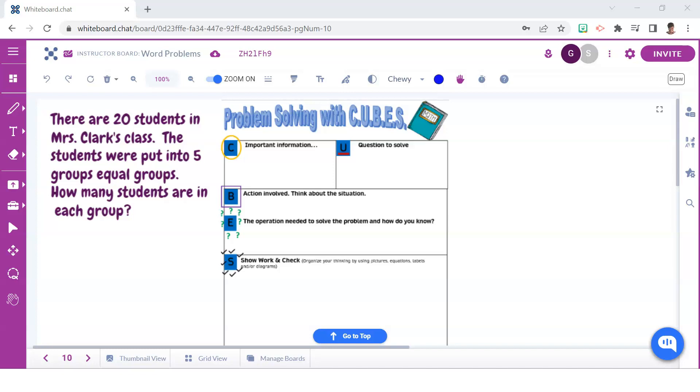Let's try this next example. It reads: There are 20 students in Mrs. Clark's class. The students were put into five equal groups. How many students are in each group?